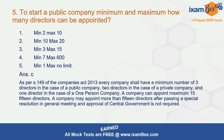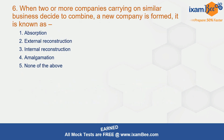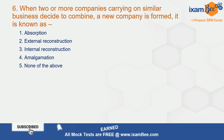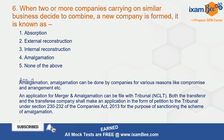A company can appoint a maximum of 15 directors. Question 6: when two or more companies carrying on similar business decide to combine and a new company is formed, it is known as — correct answer is D — amalgamation.